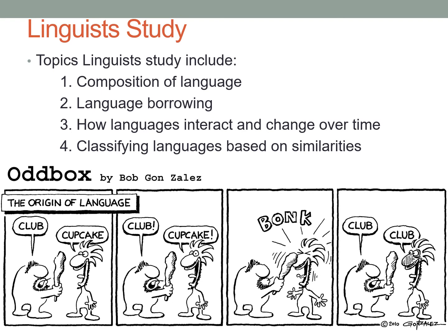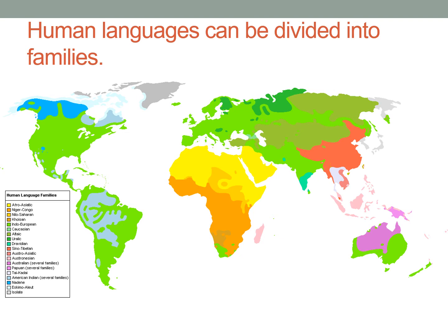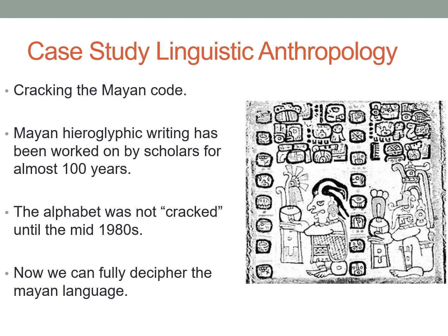A case study in linguistic anthropology is the cracking of the Maya code — there's actually a book with that title. The Mayan hieroglyphic writing system was worked on by scholars for almost 100 years after being discovered in the late 1800s. It wasn't cracked until the mid-1980s, when researchers realized each glyph was broken into components, each corresponding to an actual sound or part of a sound for a word. This allowed reconstruction of entire sentences, revealing that these hieroglyphs on monuments were retelling the history of Mayan kings and queens.